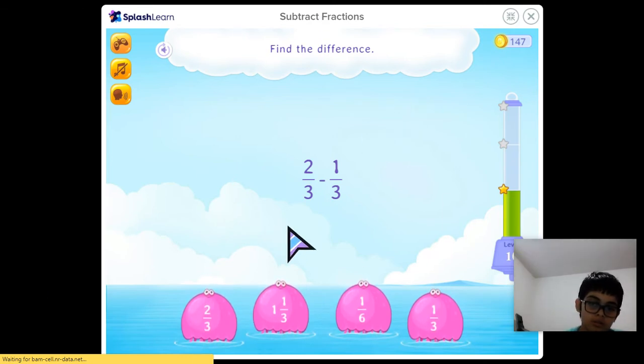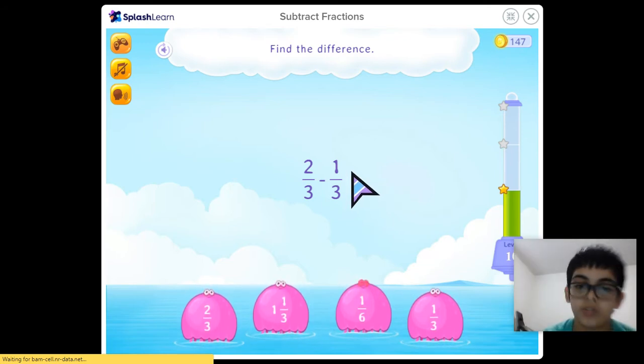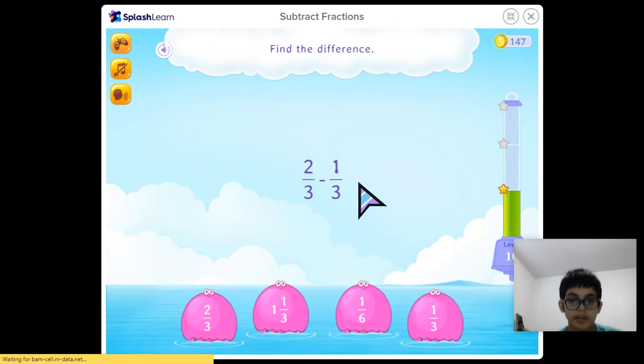So 2 minus 1 is 1, obviously. And then we would look at the denominator again. So it would be, I don't have my bar tool, I don't know where it went. But so it would be, imagine you have the equal sign right here.